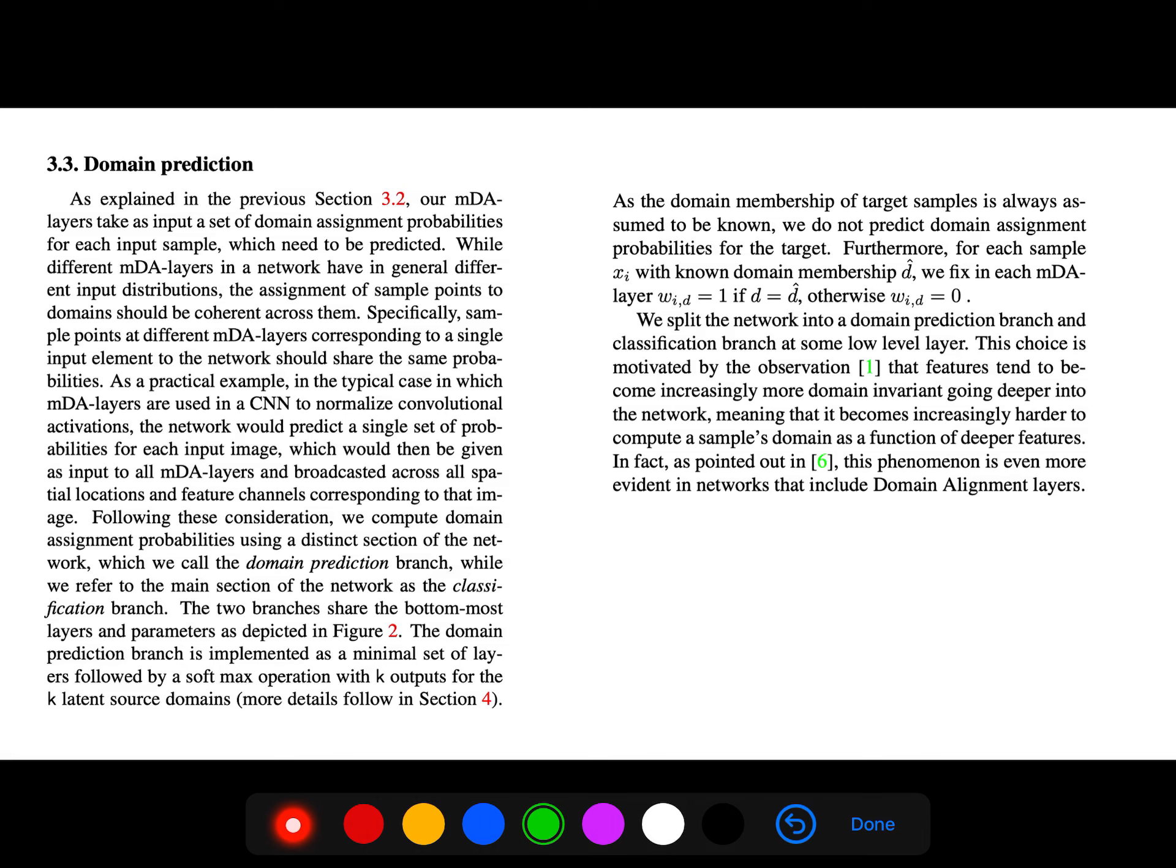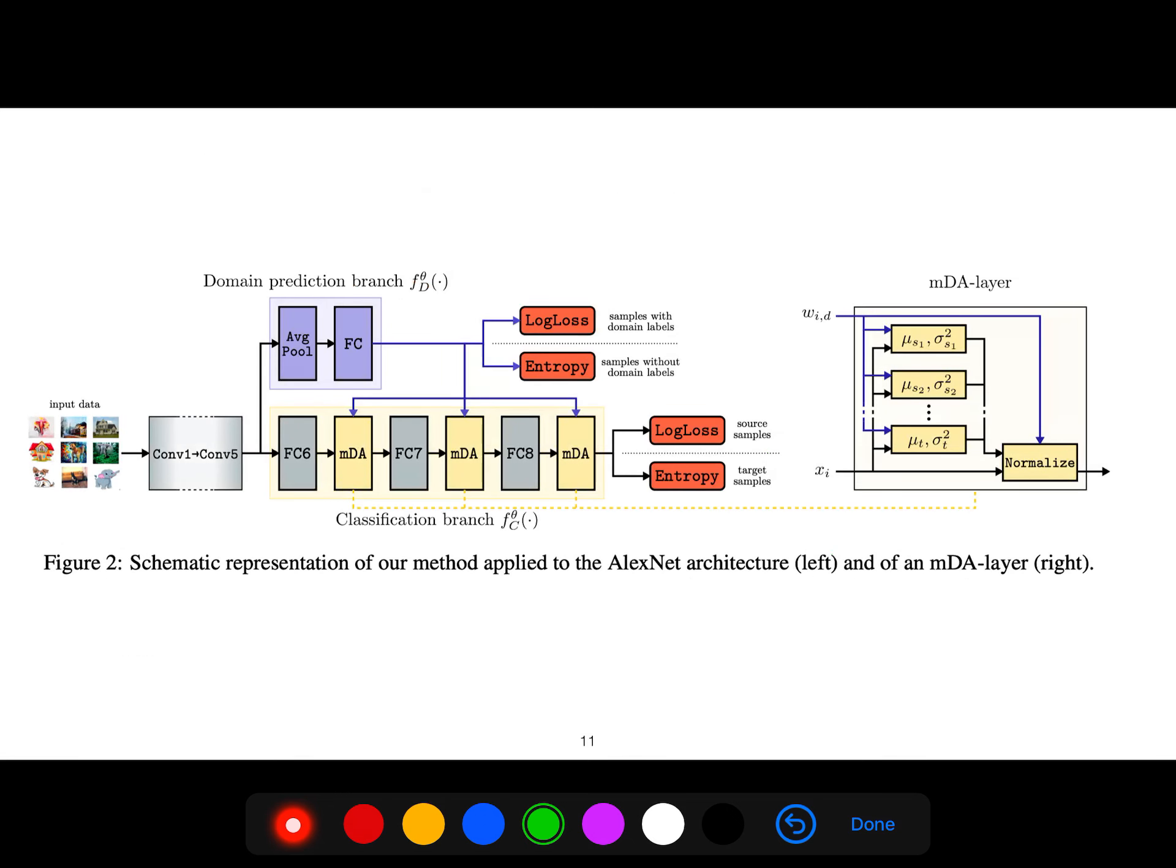We split the network into domain prediction branch and classification. So like the previous video that I talked about these things, you have AlexNet on the left where you are fully connected, then domain adaptation layer, again fully connected, then domain adaptation layer. So this is the block that they have designed.